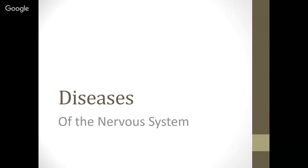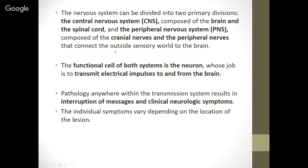We talked about the nervous system, the sense organs, and many different systems. What we have to talk about now are diseases of the nervous system. This might make you a little anxious — there are quite a few of them — but a lot of the stuff you've actually heard of before, and we're going to try to draw some connections between those and what you know.